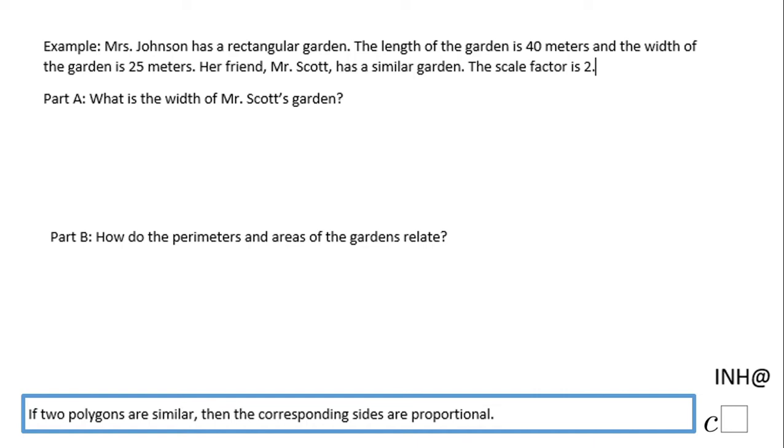Welcome or come back with any help at C Square EDC. In this example, we have two rectangular gardens. The first one is Miss Johnson's rectangular garden, which is 40 meters by 25 meters, and then we have Mr. Scott.